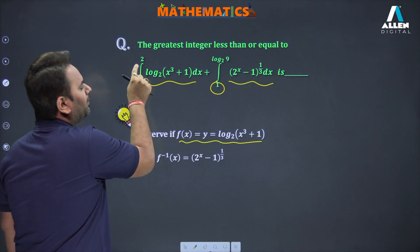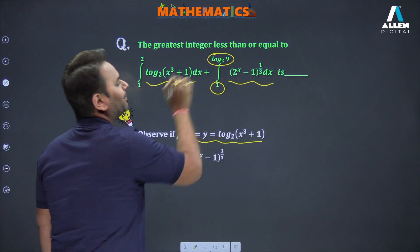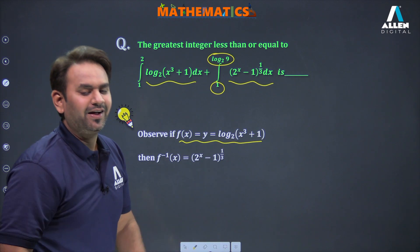If I put x equals 1 here, log of 2 to the base 2 is 1, which is the lower limit here. If I put 2, then 2 cubed is 8, 8 plus 1 is 9, log 9 to the base 2, which is the upper limit. So this tip applies here.